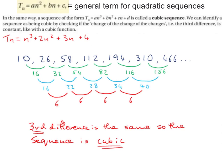If I was to sub in 3, I'd get 3 cubed plus 2 times 3 squared plus 3 times 3 plus 4, which would give me 58. If I was to sub in 4, I'd get 112. Term 5, 194. Term 6, 310. Term 7, 466 dot dot dot.